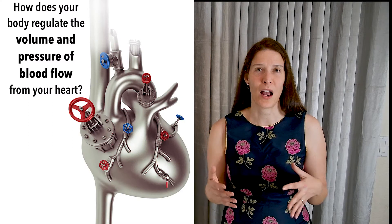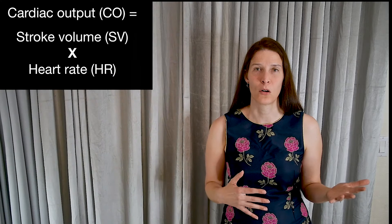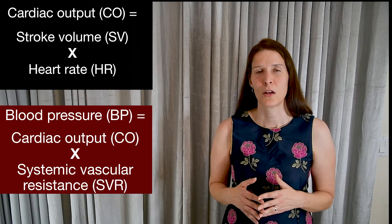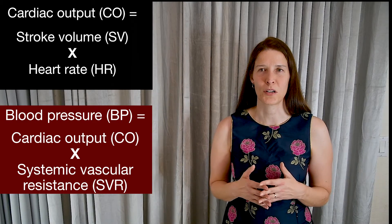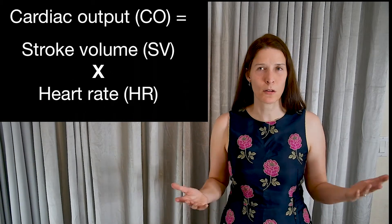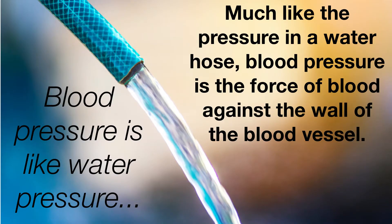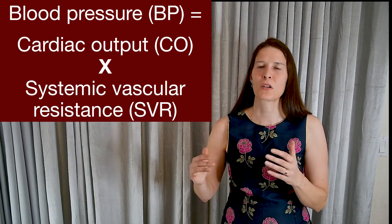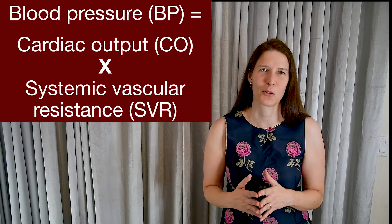Let's look at two simple equations that can explain how your body regulates pressure and flow as it pumps blood and oxygen throughout your body. The most important equation for understanding heart failure is: cardiac output equals stroke volume multiplied by heart rate. A related equation to understand hypertension — essentially when the force of blood in your arteries after leaving the heart is too high — is: blood pressure equals cardiac output multiplied by systemic vascular resistance. Hypertension and heart failure often go together, so it's helpful to know both of these equations.